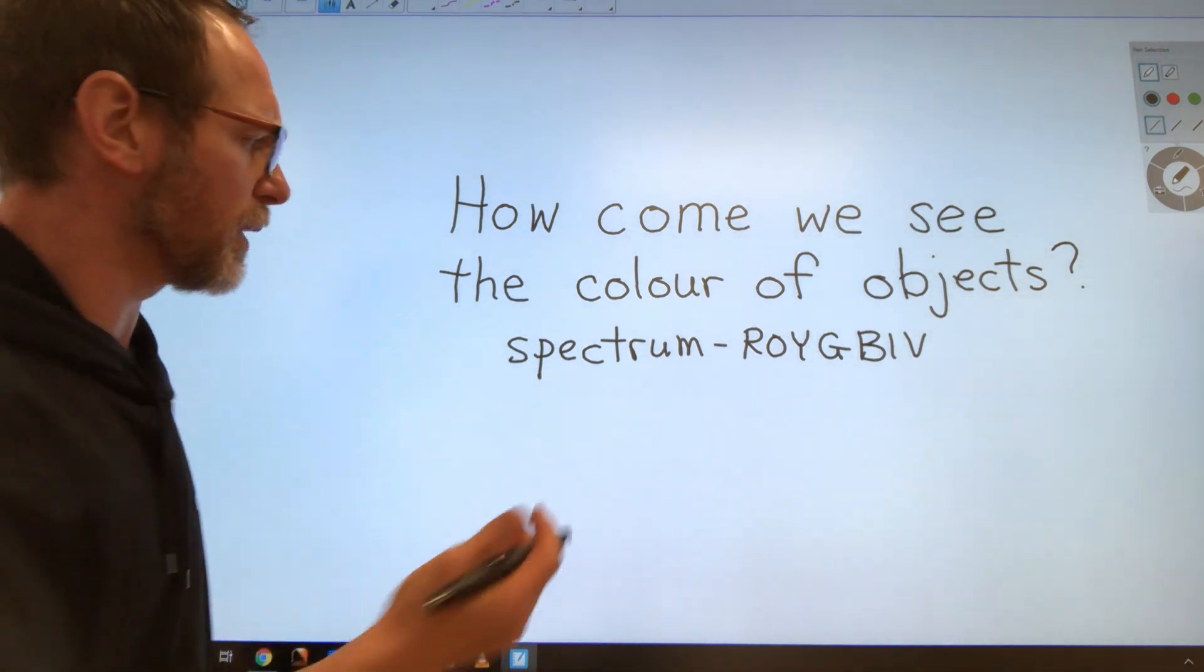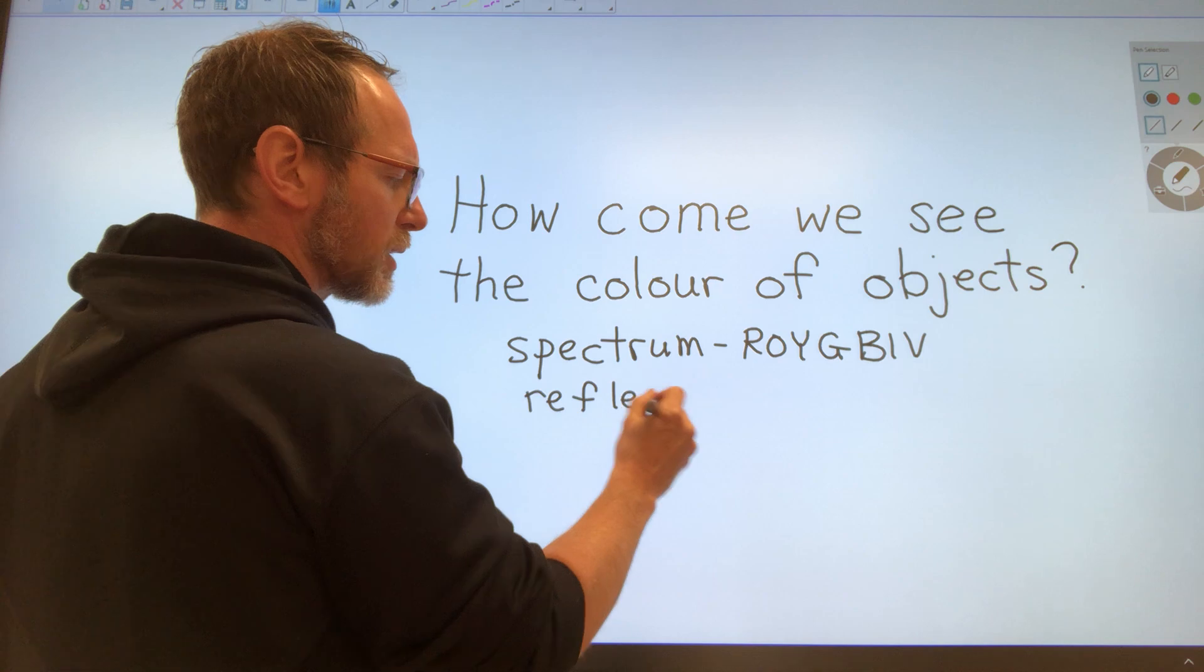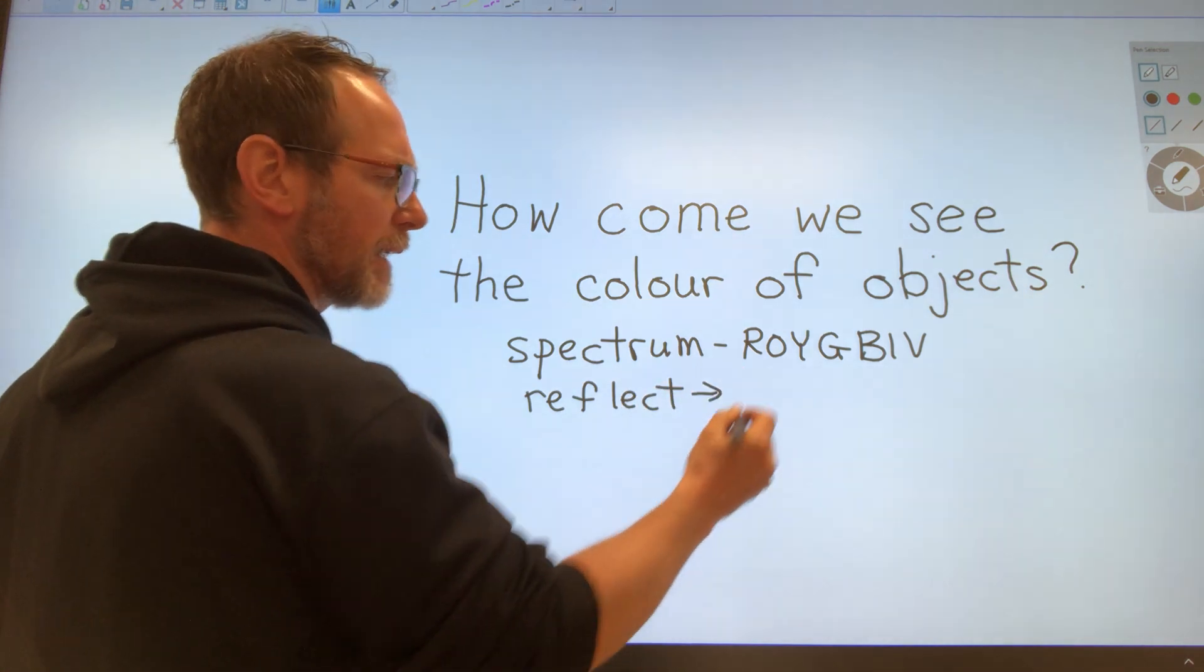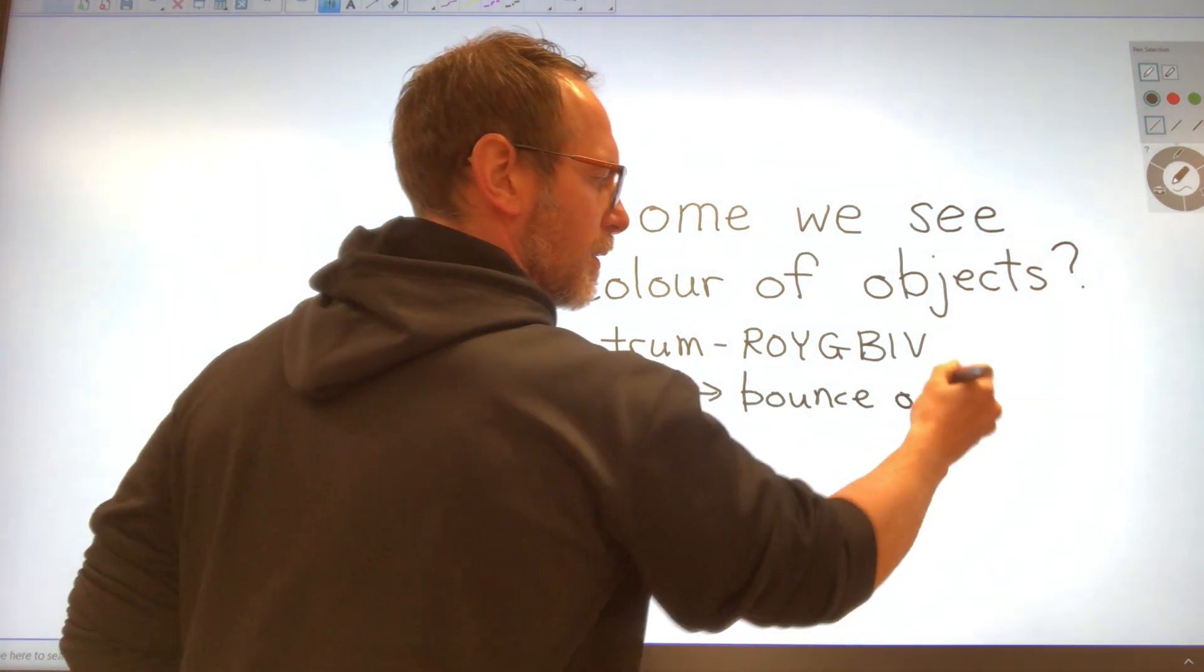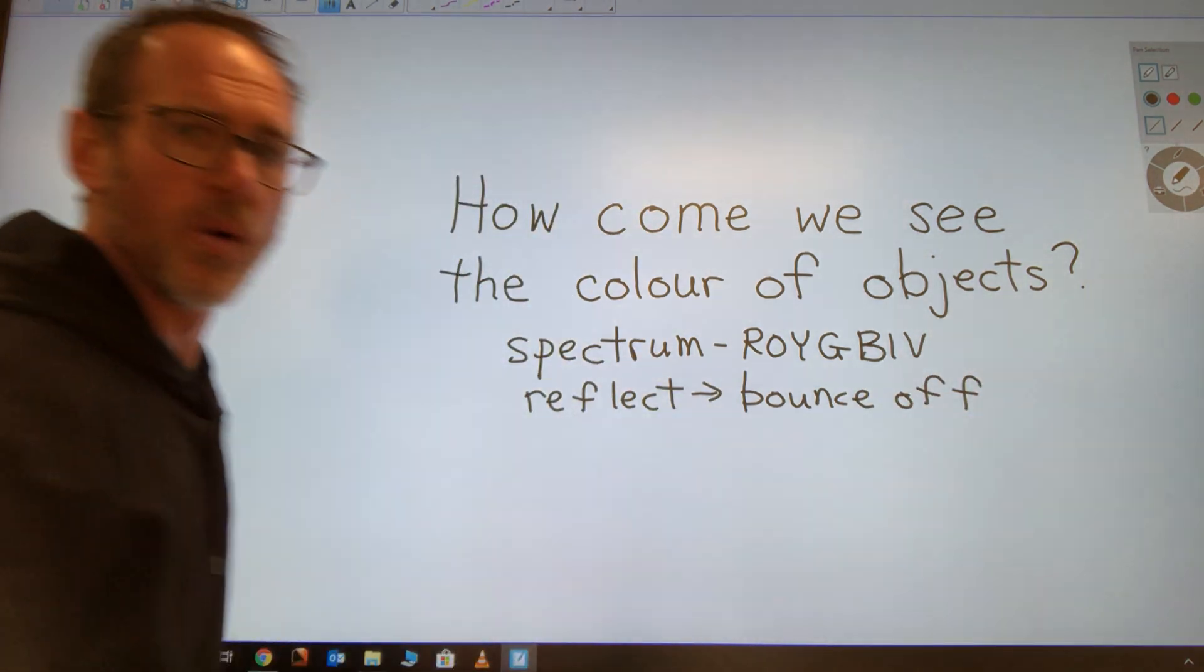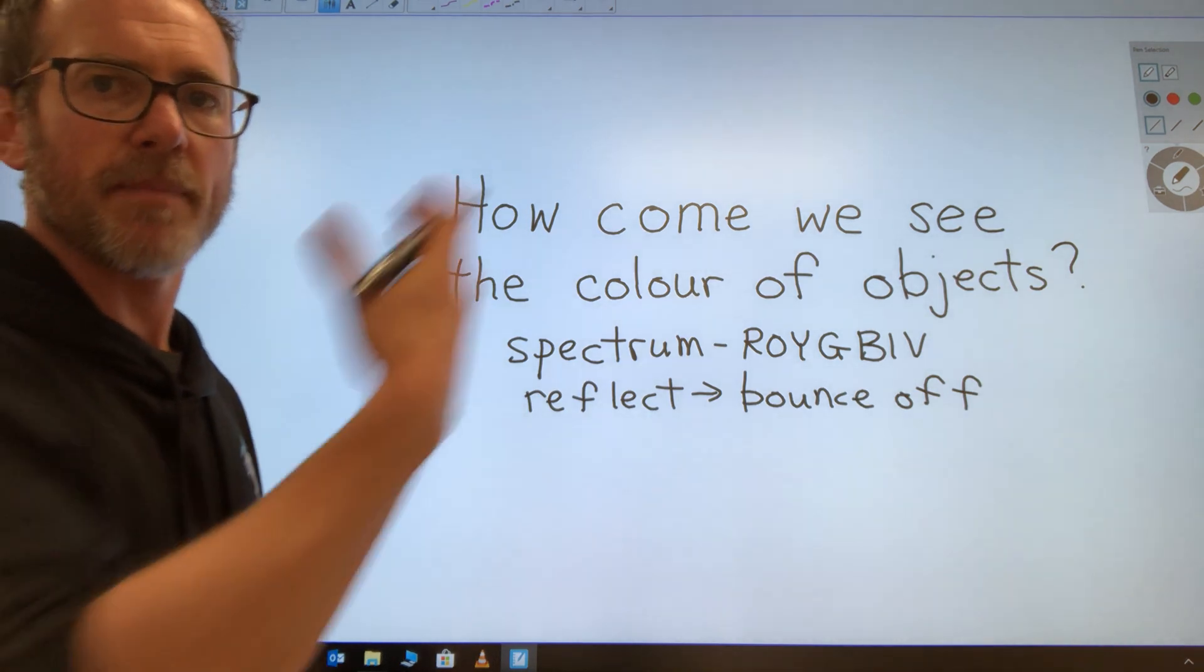Now the next thing we need to know is the word reflect. Now we talked about this last week. Reflect means bounce off. So we know when light hits some things it will hit them and bounce off of them.